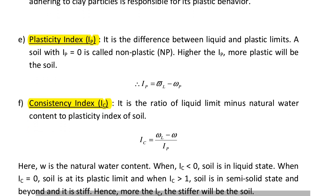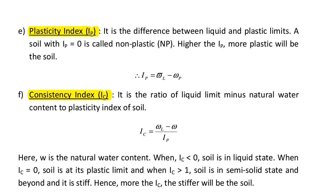Next we are going to see the definition of plasticity index IP. Plasticity index is the difference between liquid and plastic limits. A soil with IP equal to 0 is called non-plastic, and higher the IP, more plastic will be the soil. Plasticity index IP = WL minus WP.